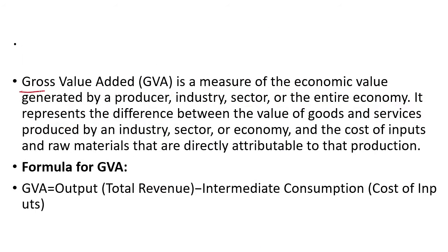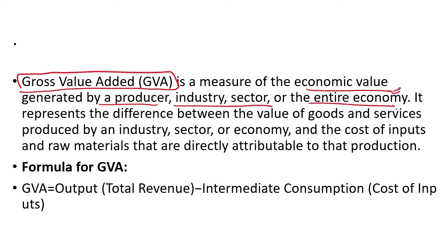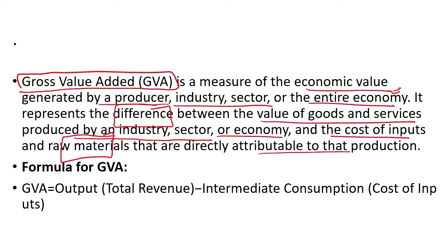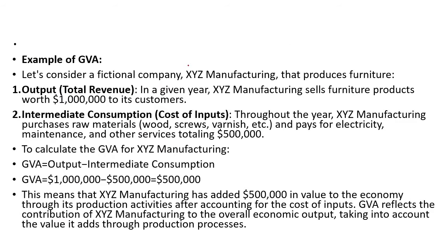Another term here is Gross Value Added (GVA). Gross Value Added is a measure of the economic value generated by a producer, industry sector, or the entire economy. It represents the difference between the value of goods and services produced and the cost of inputs and raw materials directly attributable to that production — essentially your GDP minus your cost of inputs.